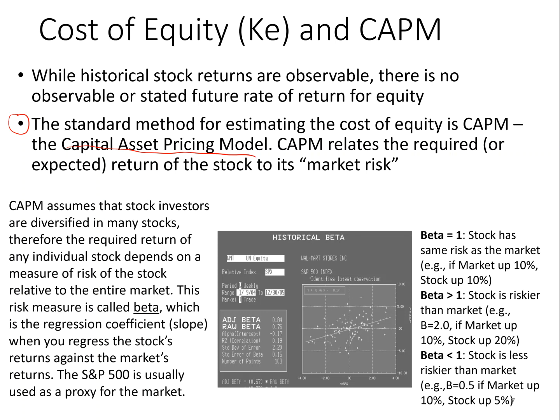The main assumption for CAPM is that investors are diversified in many stocks. If you're looking at the required return of any individual stock, that depends on the risk of the stock relative to the entire market. Assume the average investor holds the full market — we'll call that the S&P 500. So if you're looking at how your total portfolio risk will change by adding an individual stock, you need to look at the sensitivity of that stock to the entire market.